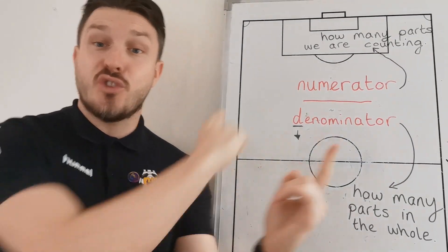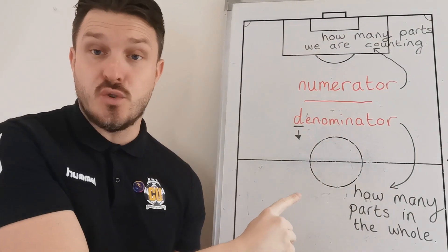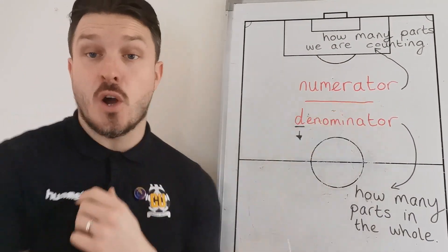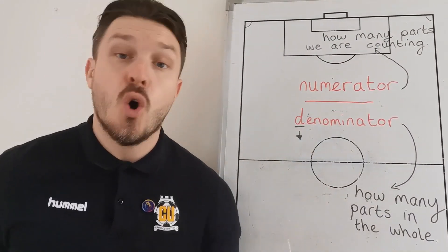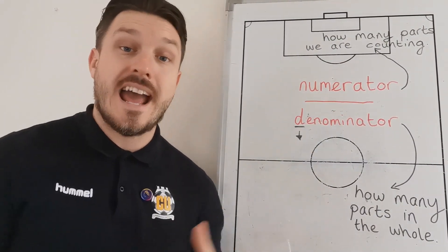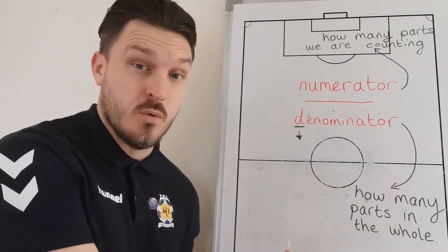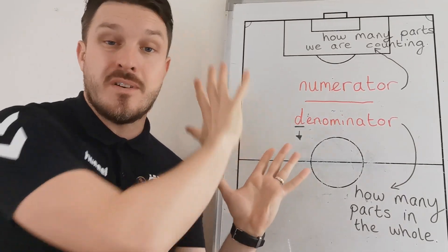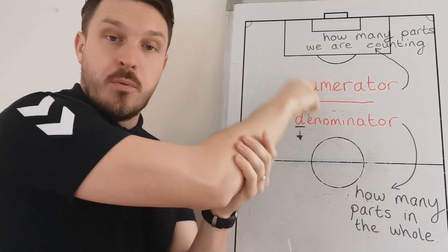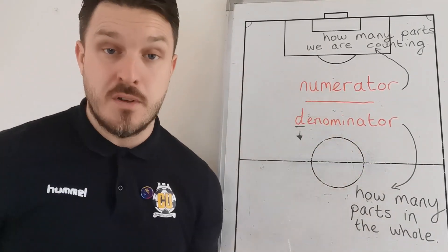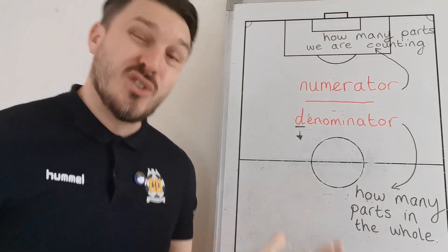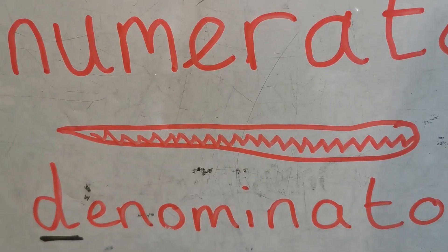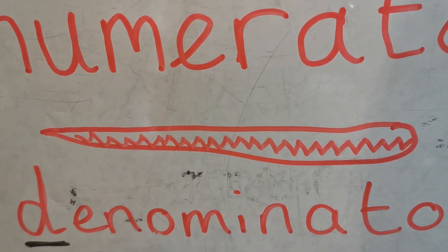And what we have is those two values are connected together with a line that goes through the middle, which is called a vinculum. It's not as important that we remember that at this stage, but it is really important that we remember these two. Sorry, vinculum, you will be.